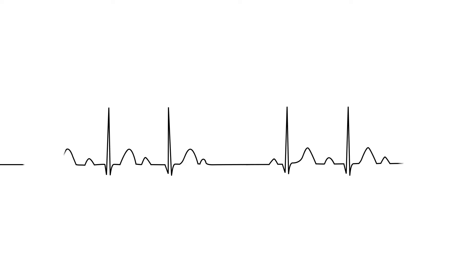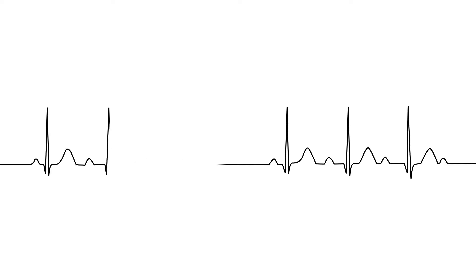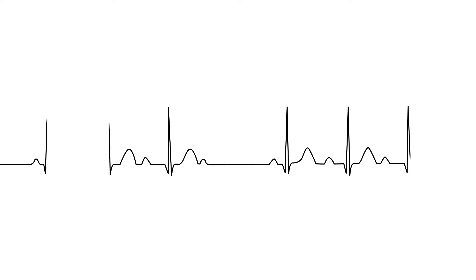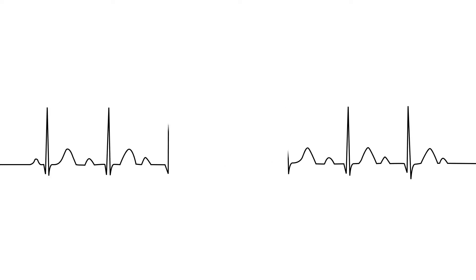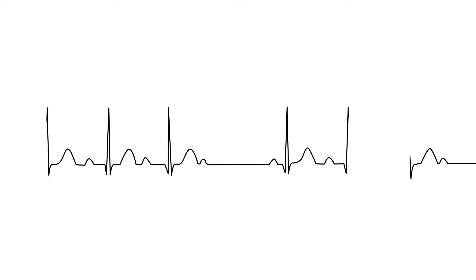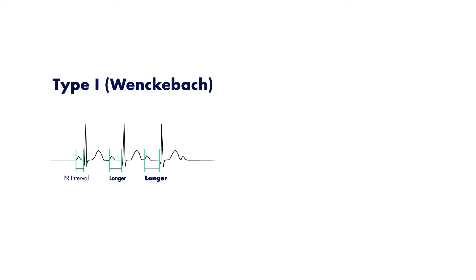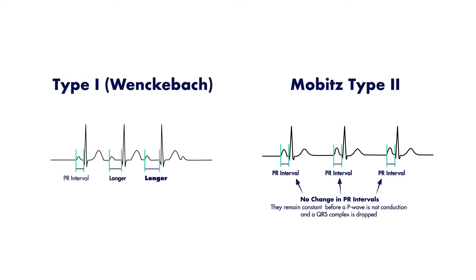In second degree AV blocks, there is an occasional P wave that does not get conducted to the ventricles. This usually results in a long PR interval, but more telling is that some P waves are not followed by subsequent QRS complexes. There are two types of second degree AV blocks: type 1 or Wenckebach, and Mobitz type 2 second degree AV blocks.